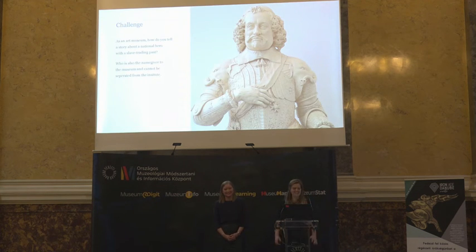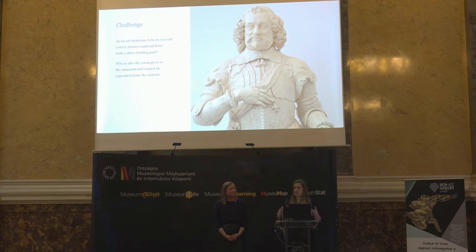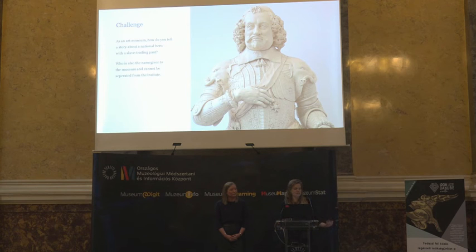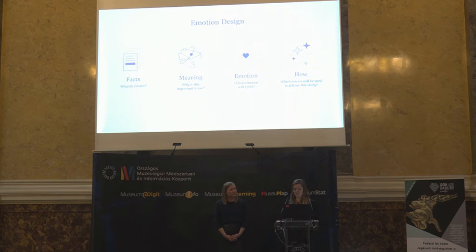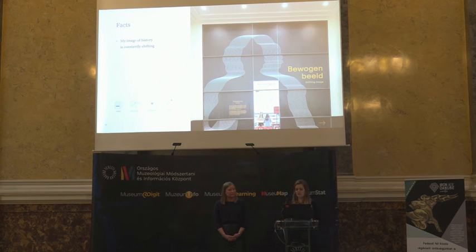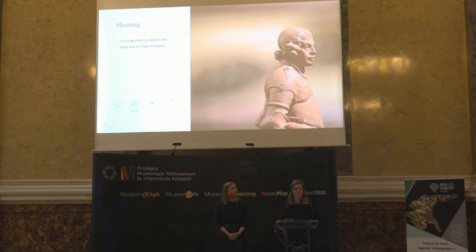This exhibition is about Johan Maurits, who is the name-giver of the museum, but also has a history as a national hero with a slave-trading past. There was very much public debate going on, because the museum removed the statue to showcase it somewhere else, and there was a lot of commotion — that was a starting point for creating this exhibition. And we can content design and emotion design this. The facts are that history is constantly shifting — how you see things right now is different than how you saw it 50 years ago or how you'll see it in 50 years' time. And why is this important? Well, it's important for a museum to stick to the facts. Between all these opinions, you need to showcase the facts, because that is what you know, and then you can take a place in this debate.